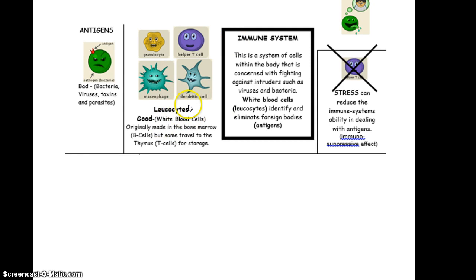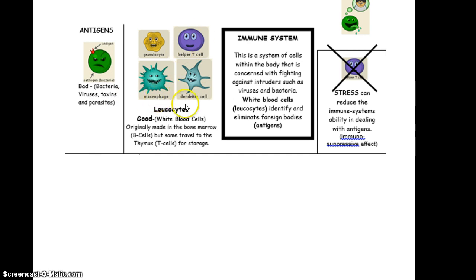Leukocytes are the good white blood cells, and they can be divided into B cells — basically made in the bone marrow — and T cells, made in the thymus. Antigens mean bad bacteria; leukocytes just means white blood cells. We have different types of leukocytes such as natural killer cells and helper T cells, but don't get bogged down on those names. Leukocytes is more than enough to know.